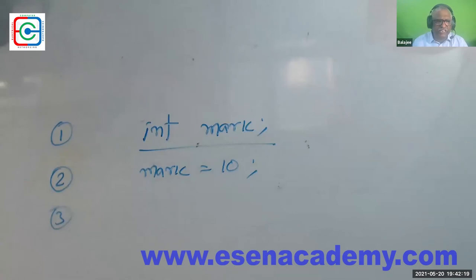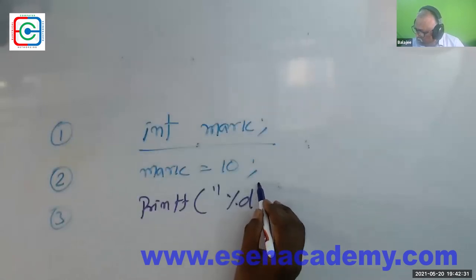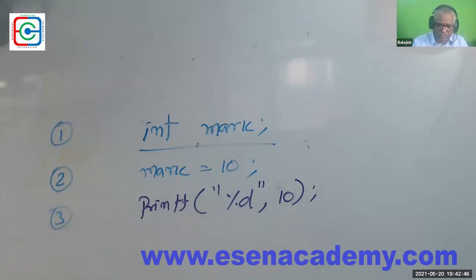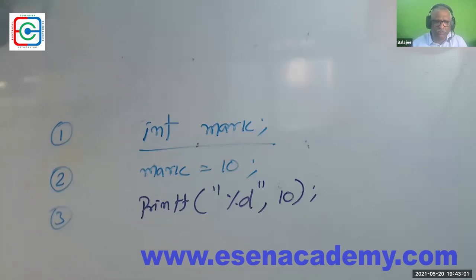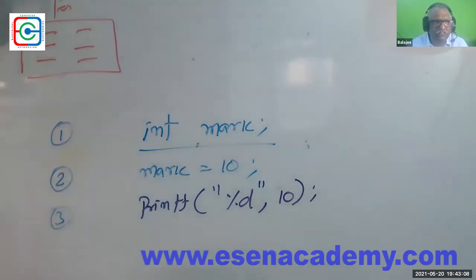Unfortunately, these statements alone are not enough in C because C has a specific framework — like a railway reservation form. You can't just write anything; you have to fill the official form. Similarly, in C, you must write everything within the required framework. Whatever you write goes inside this framework. After 8 o'clock I can explain all these framework details; for now, just follow it and don't get confused.